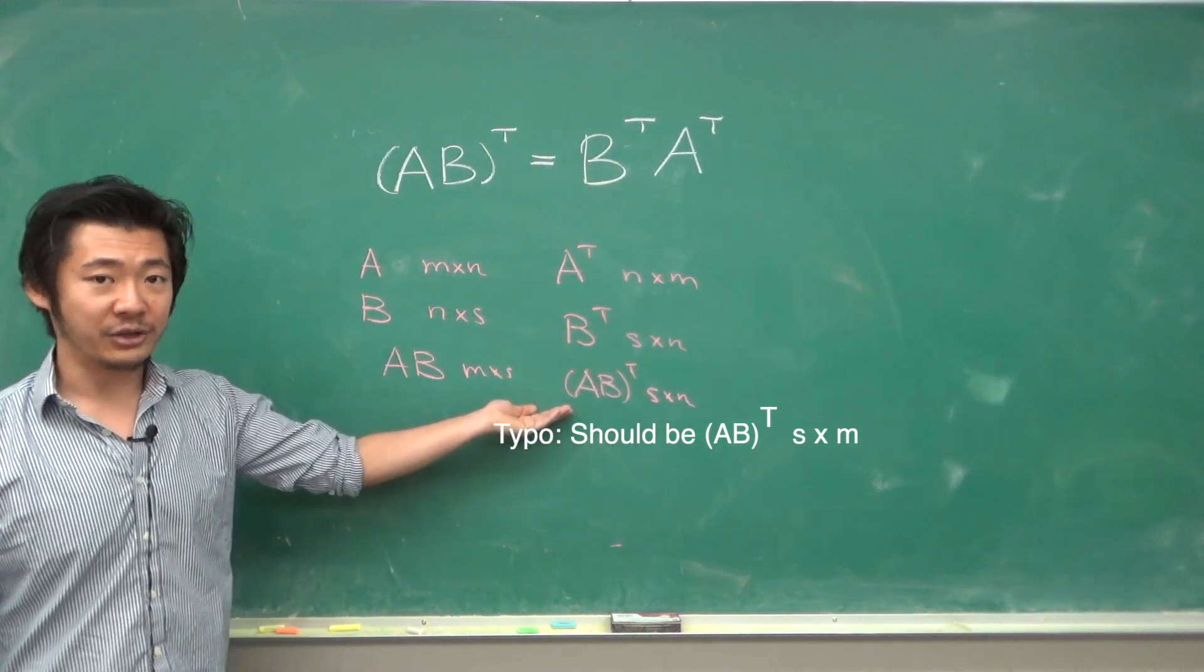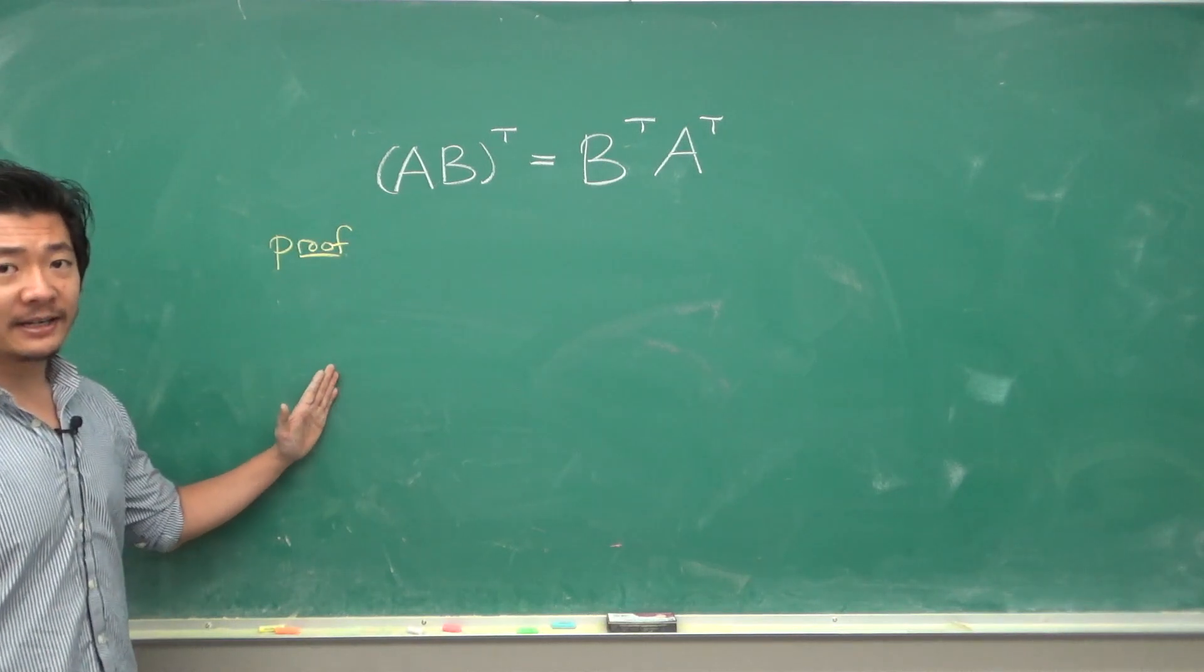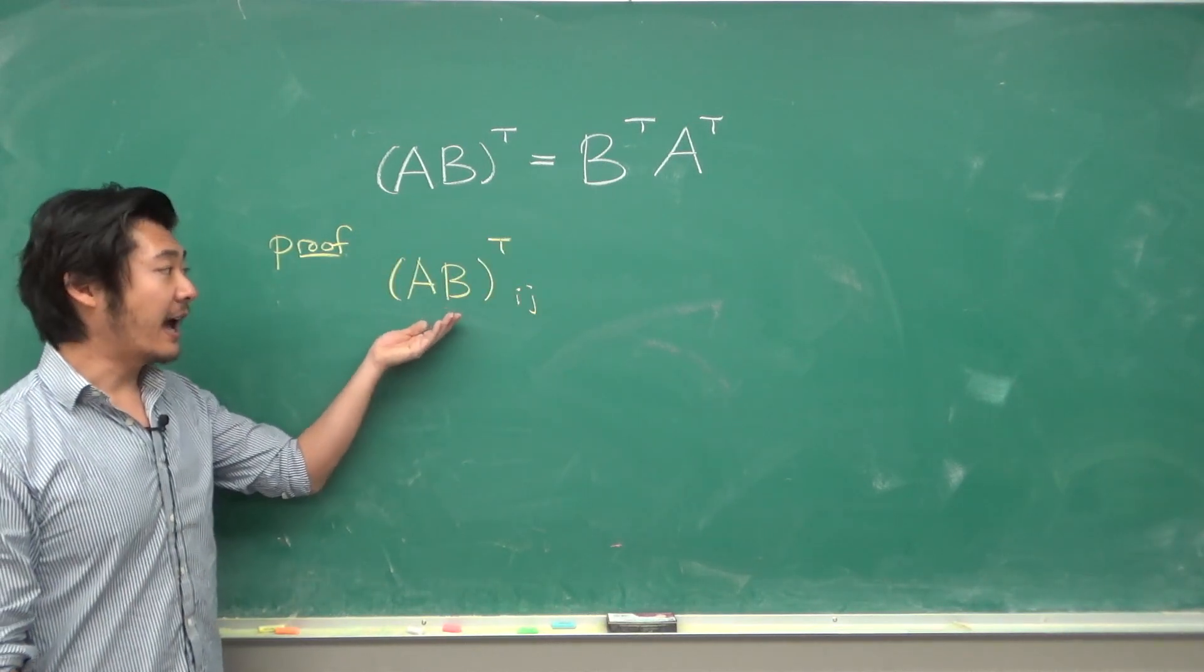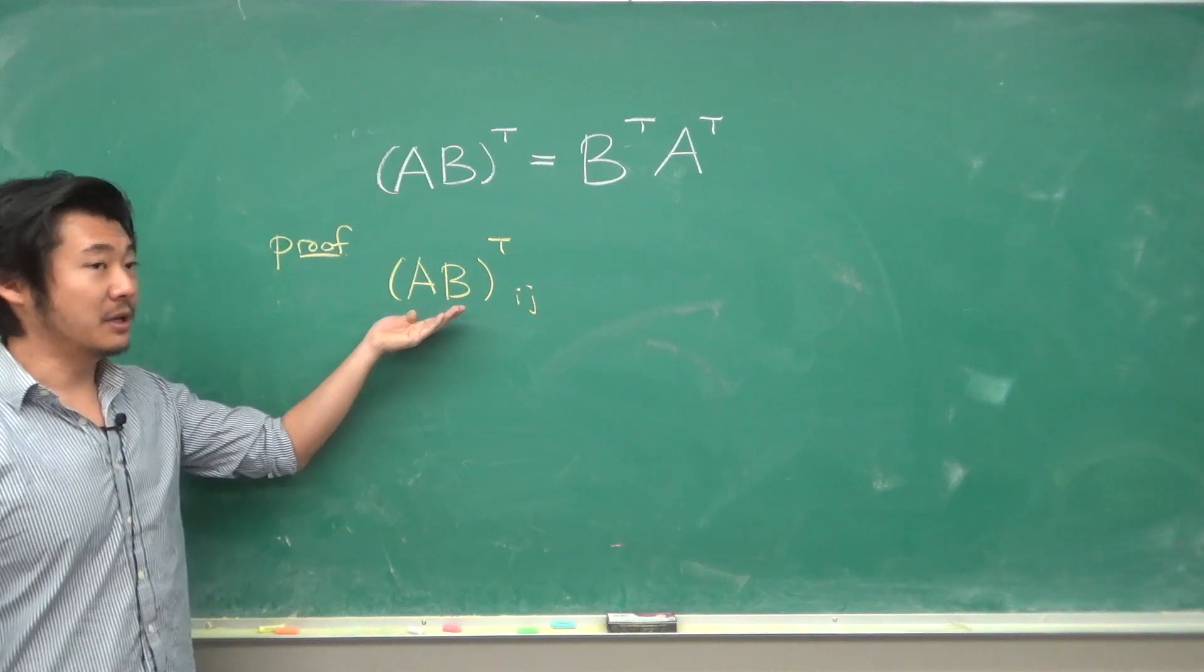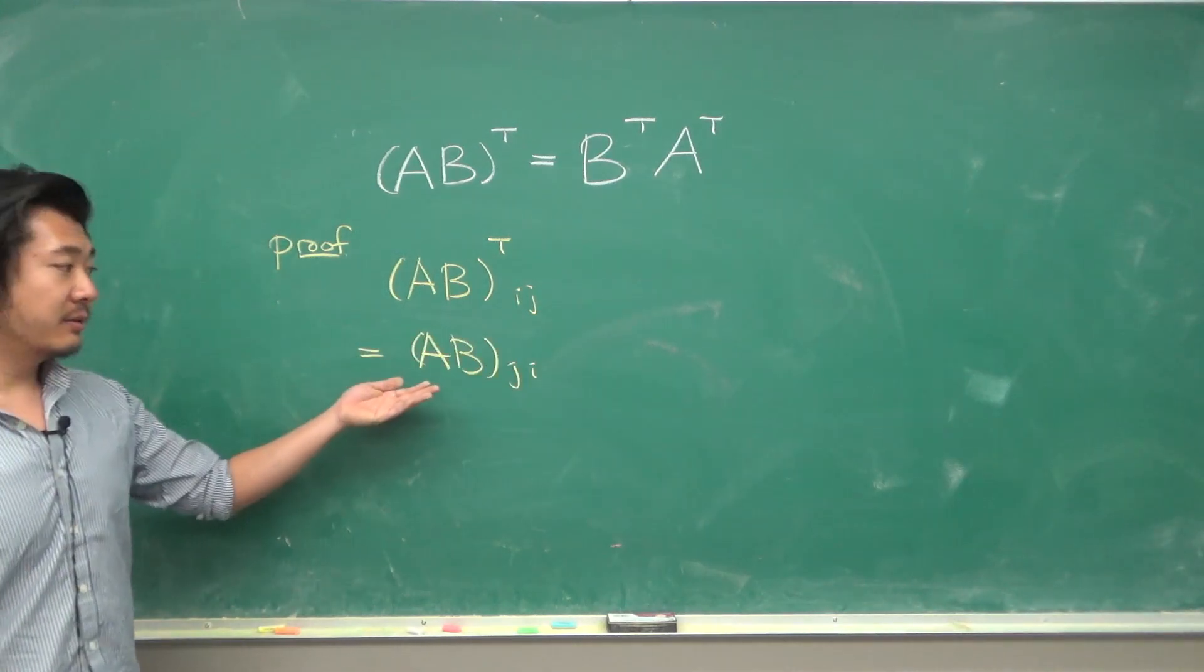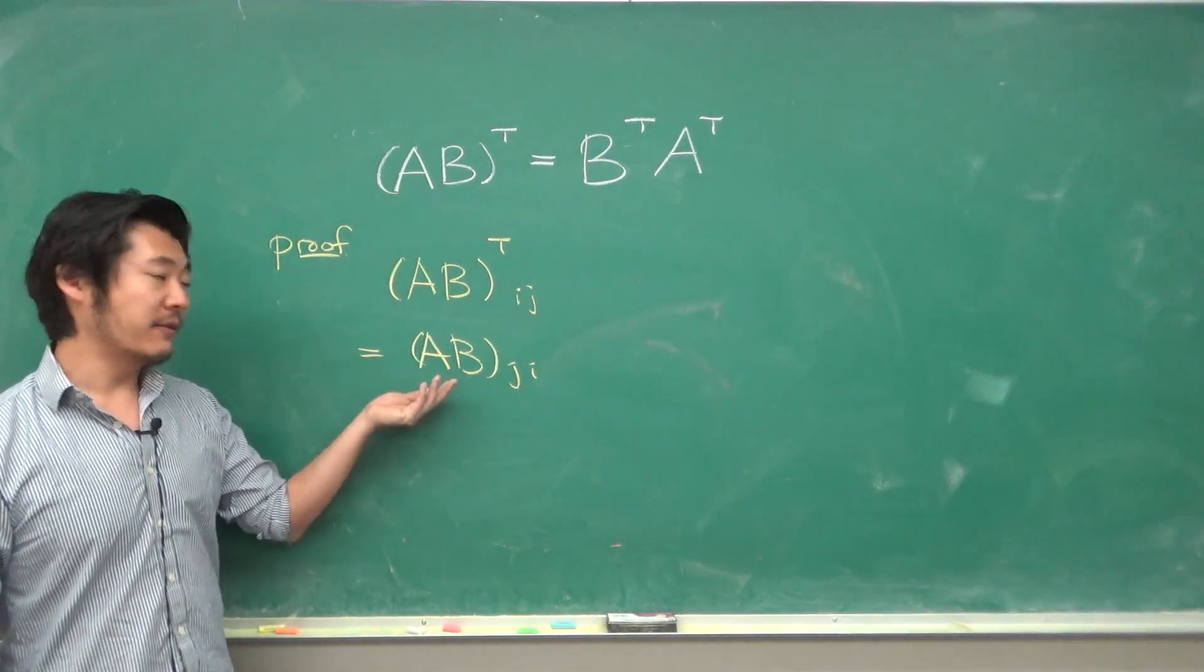A quick proof of why this identity is true. To compute the i-jth entry of AB transpose, this will be the j-ith entry of AB, which can be computed as follows.